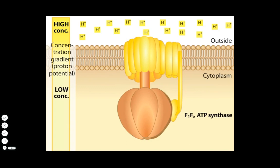has two main parts: F1 which protrudes into the cytoplasm and F0 which sits in the membrane.